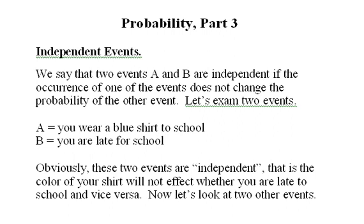Probability, Part 3: Independent Events. We say that two events, A and B, are independent if the occurrence of one of the events does not change the probability of the other event. Let's examine two events.